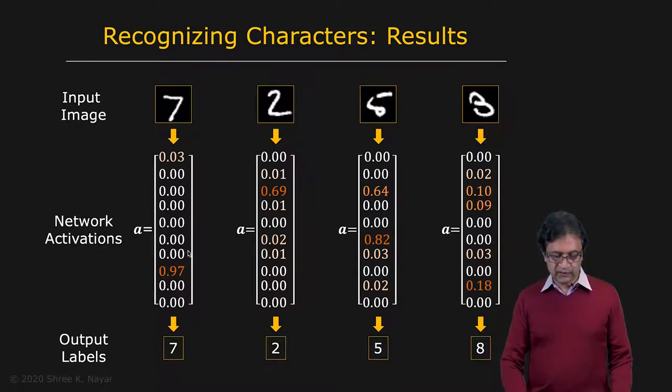You can see in the case of seven, you get a very strong result, 0.97 here and close to zero everywhere else. In the case of the two, again, a very strong result right here for two.